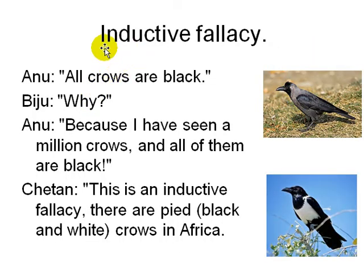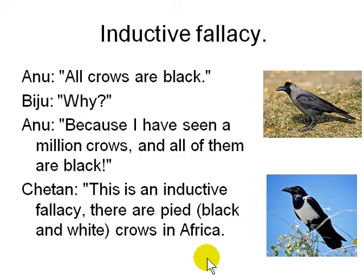Then there is the inductive fallacy, which we looked at in the last lecture. 'All crows are black because I have seen a million crows and all of them are black.' This is an inductive fallacy because there are black and white crows in Africa — you just don't see them elsewhere. By looking at a few examples you cannot make a theorem. You should say 'all the crows I have seen are black,' not 'all crows in the world are black.'